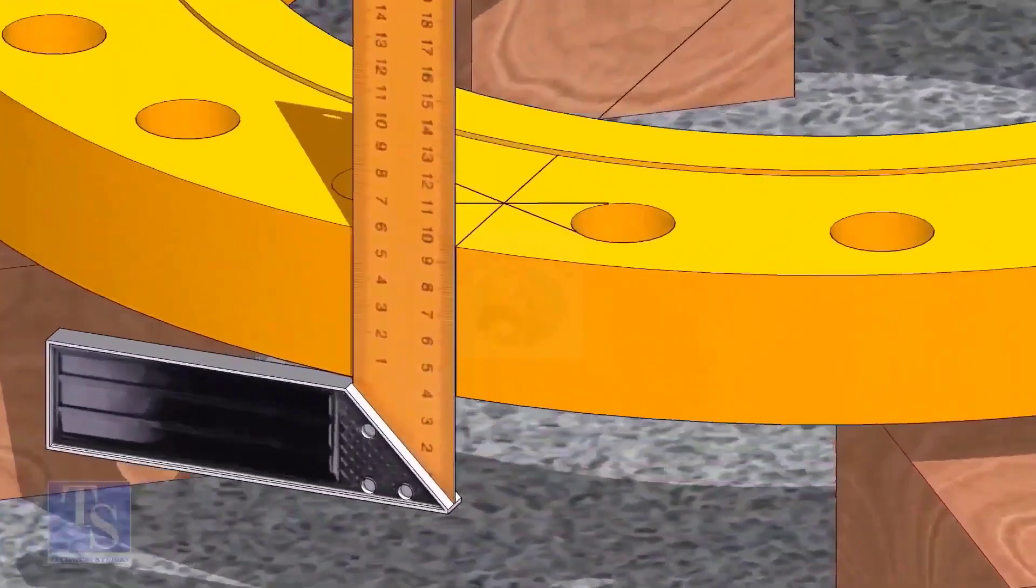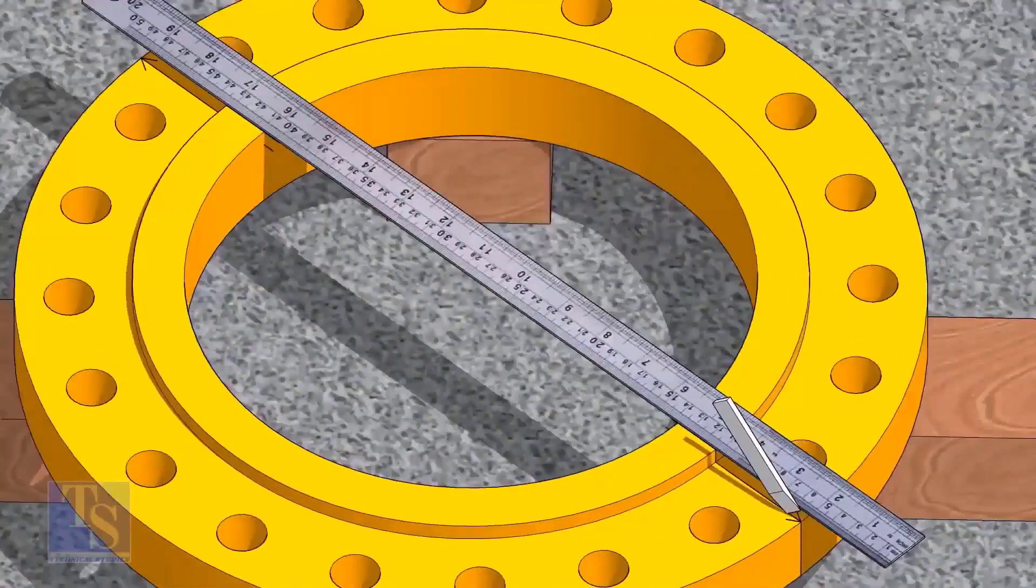Now transfer the center line to the sides of the flange. Overturn the flange and transfer the center line on the back side of the flange.